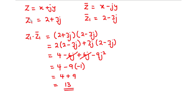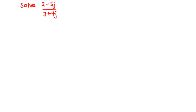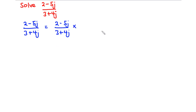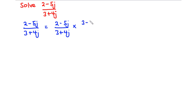Now let's move on to how to divide complex numbers. To divide two complex numbers, you need to multiply both the numerator and the denominator by the complex conjugate of the denominator. For example, given (2 - 5j) divided by (3 + 4j), we multiply both numerator and denominator by the complex conjugate of the denominator, which is (3 - 4j).